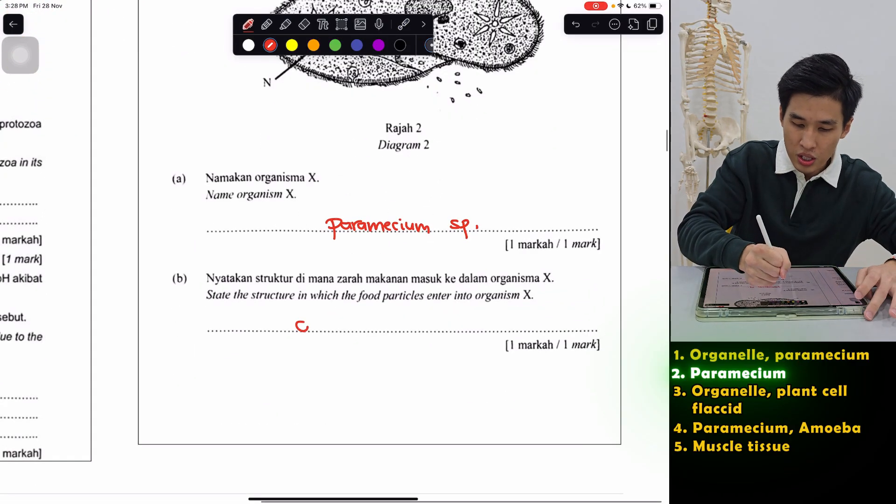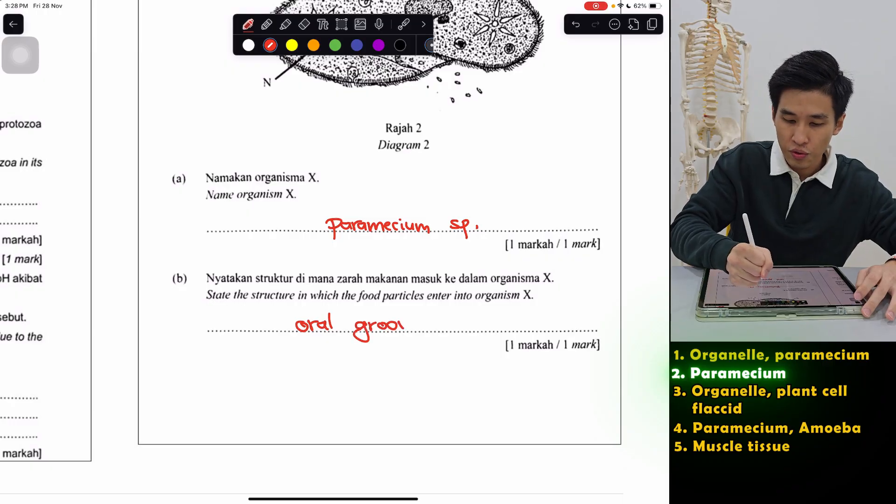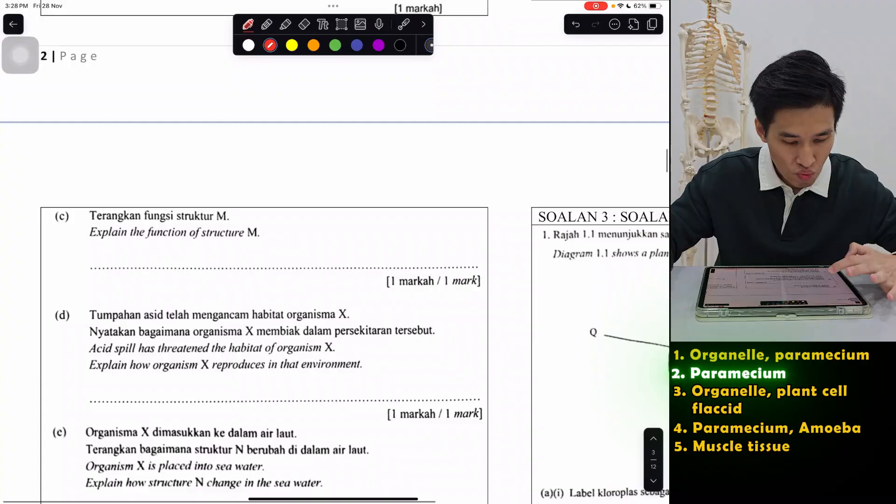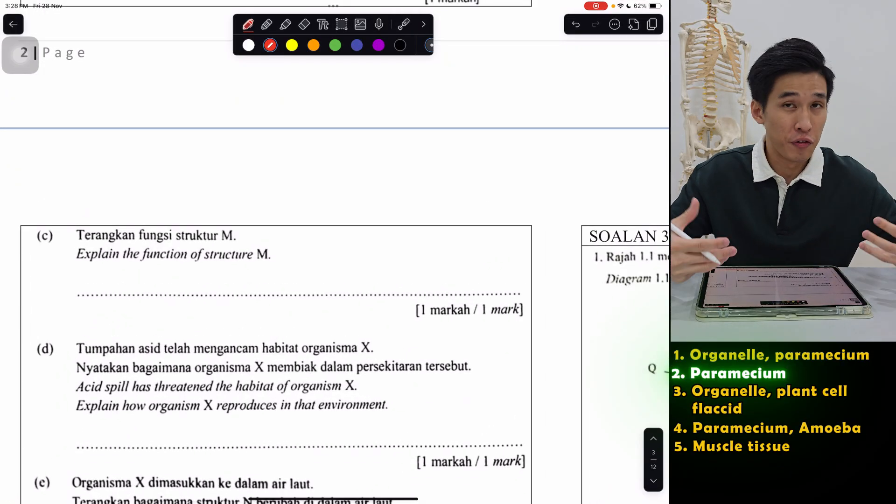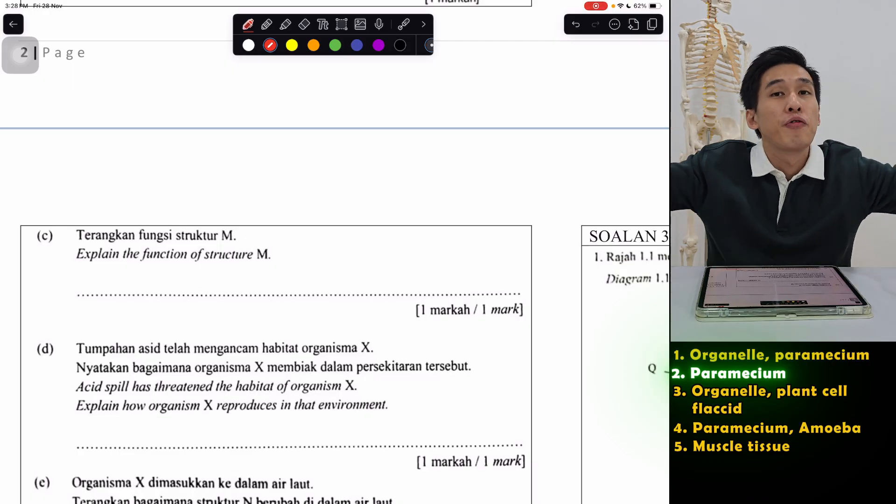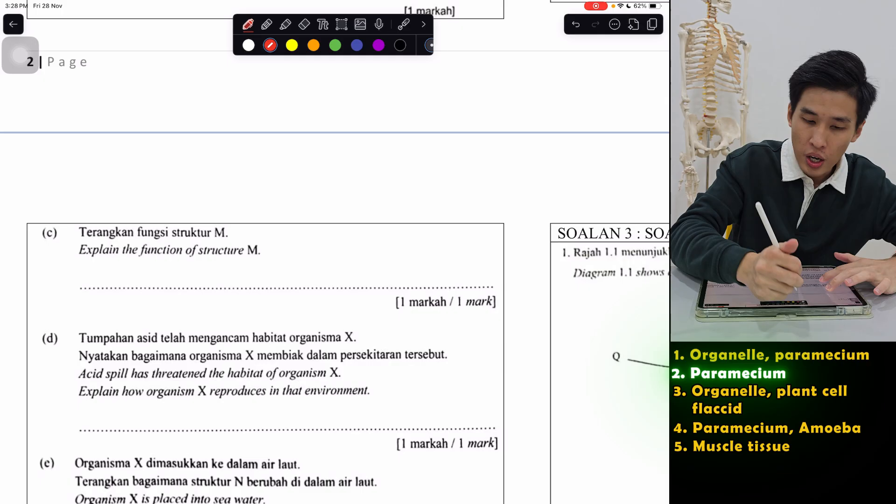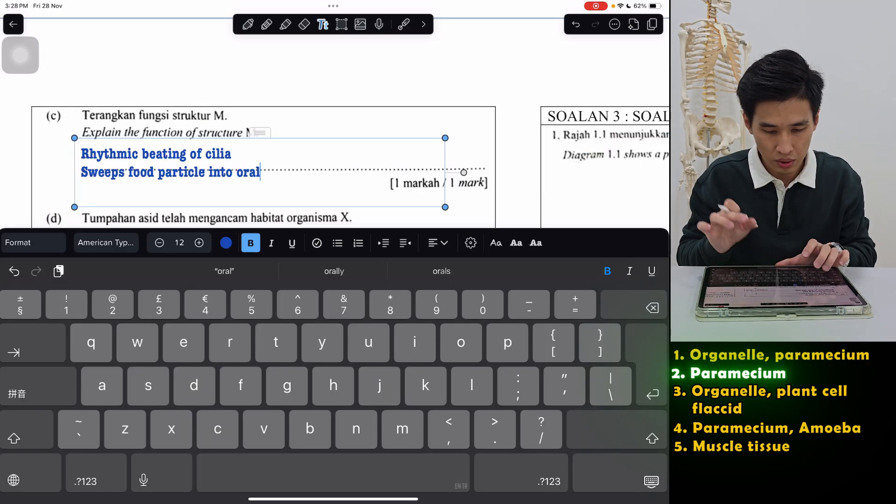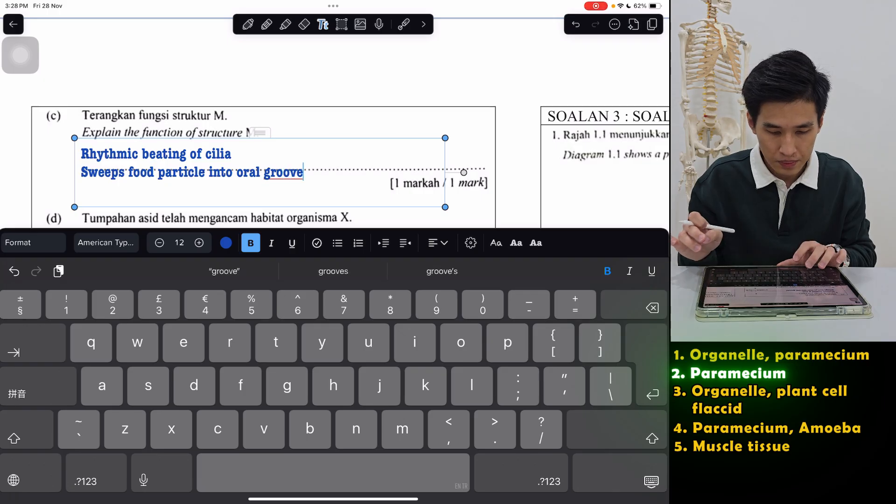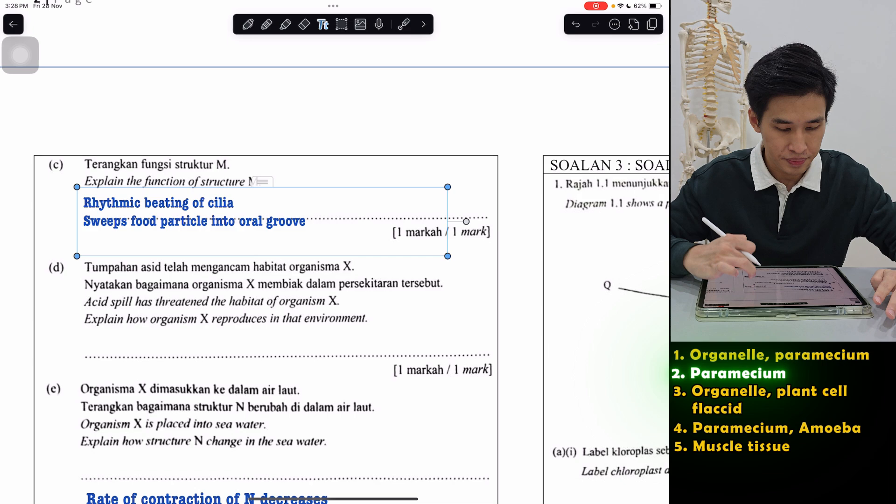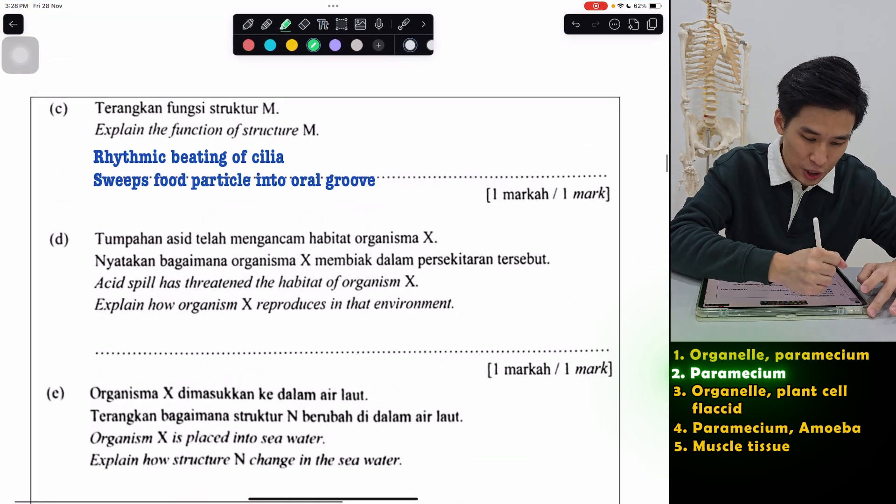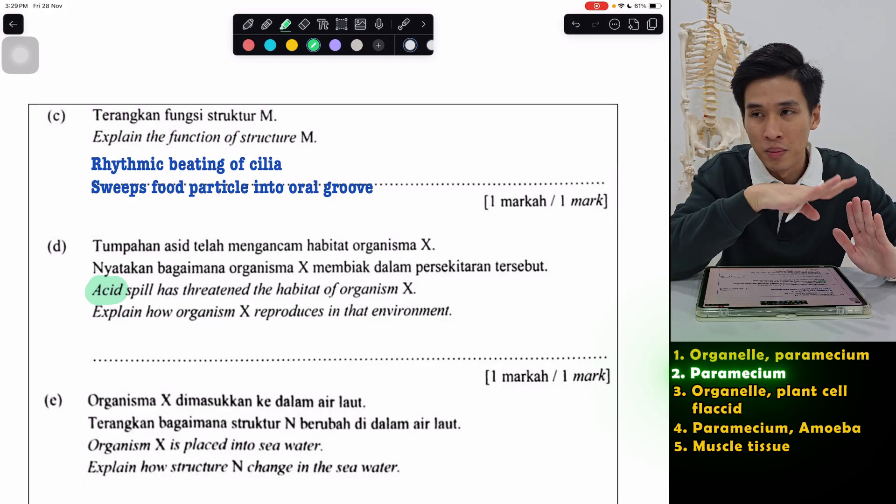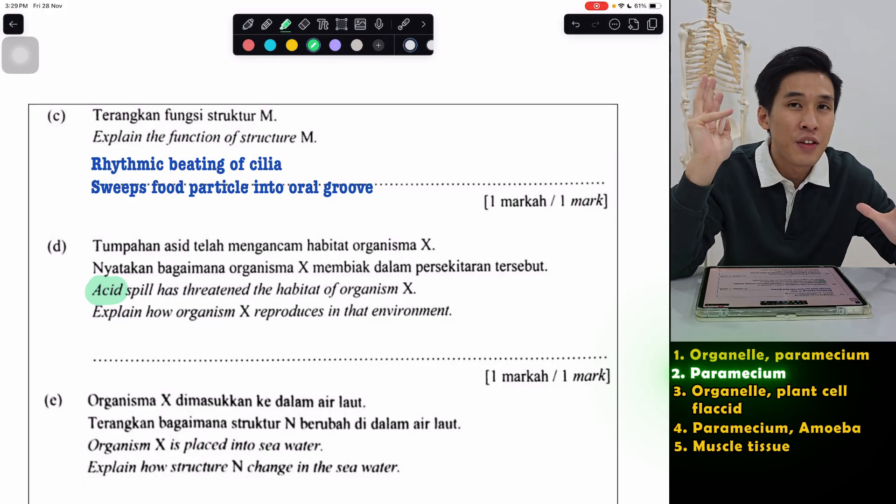Explain the function of M, cilia. So cilia got a few roles. Just now we mentioned it helps it to move. It also can help to sweep food into the oral groove. So you can write that this rhythmic beating sweeps the food into the oral groove. And again, got acid, got pH change, has threatened the habitat of organism X. How will organism X reproduce in an environment? Other than running away from pH change, if the environment is unfavorable, remember reproduction, there are two methods. When the condition is favorable and non-favorable, they reproduce differently.